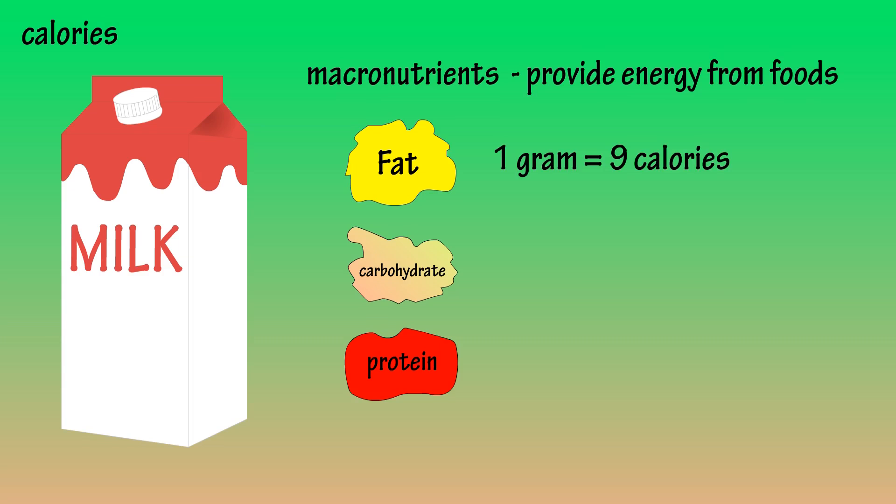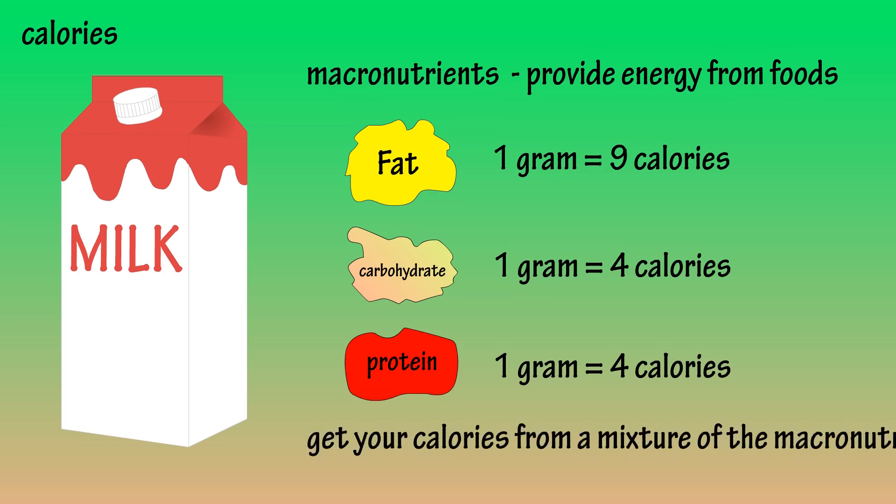Carbohydrates and proteins provide 4 calories per gram, and it's best to get your calories from a mixture of the macronutrients.